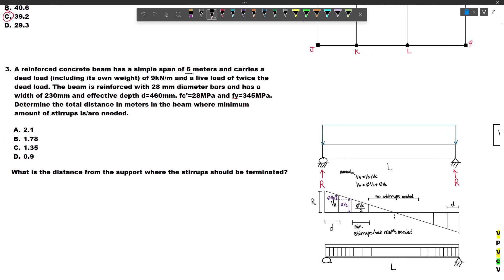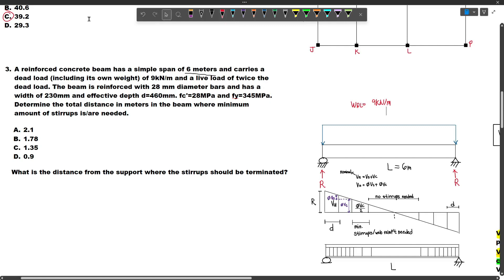Our beam is 6 meters long, so L equals 6m. It carries a dead load of 9kN/m, so WDL equals 9kN/m. We don't need to multiply by the unit weight of concrete and cross-section because it says including its own weight. If it didn't say that, you would have to multiply the unit weight of concrete by the area of your beam. It also carries a live load of twice the dead load, so WLL equals 9 times 2, which is 18kN/m.